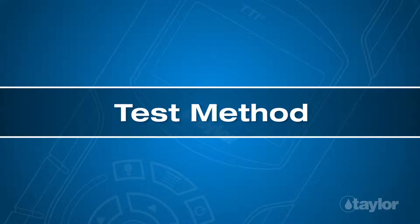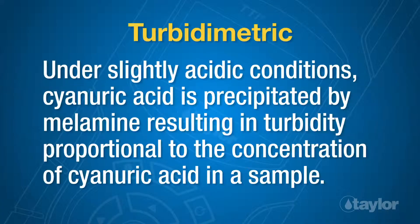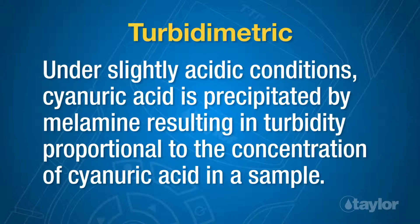Test method: turbidometric. Under slightly acidic conditions, cyanuric acid is precipitated by melamine, resulting in turbidity proportional to the concentration of cyanuric acid in a sample.